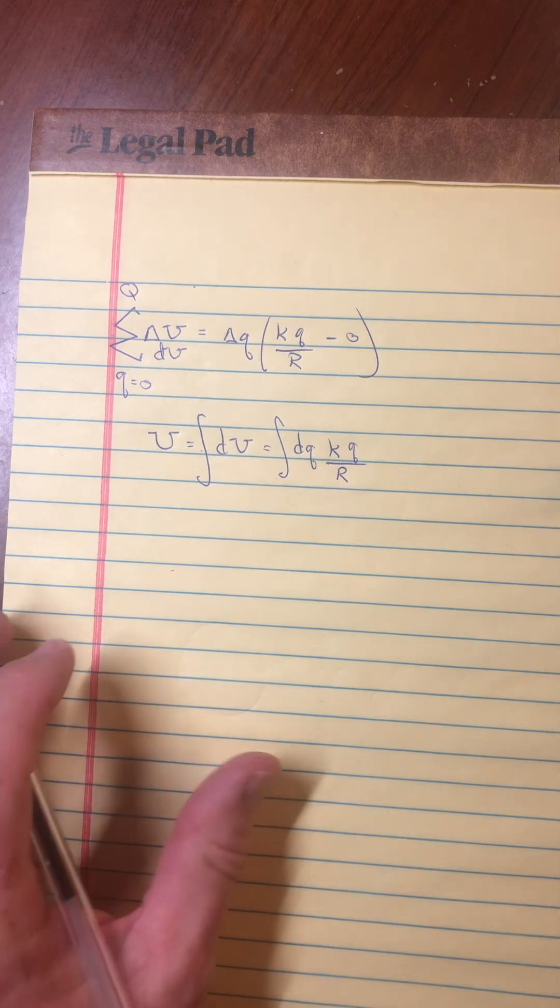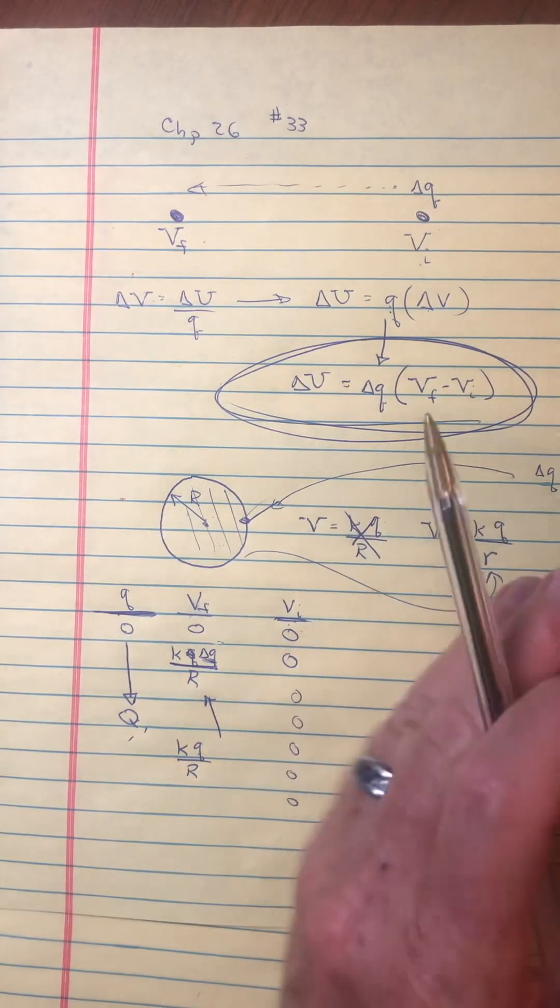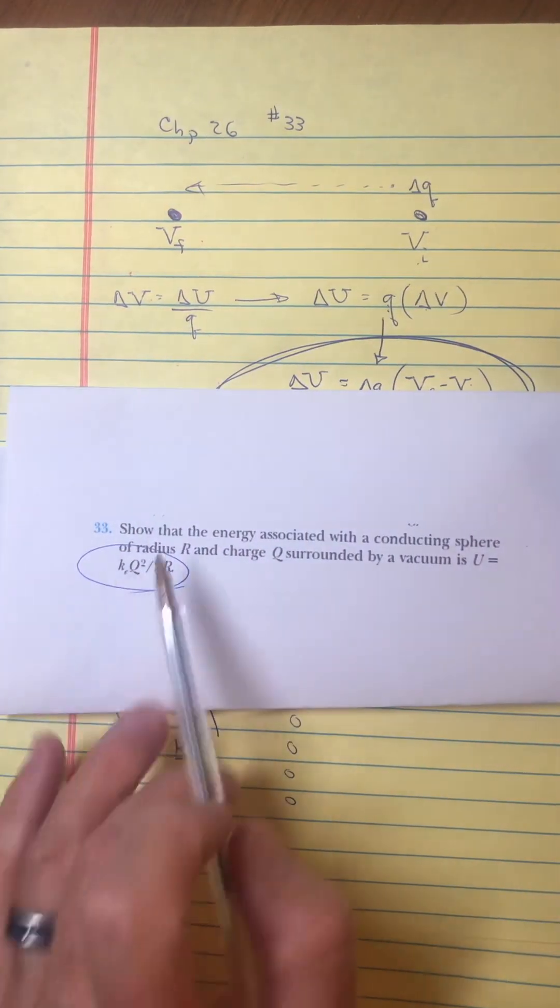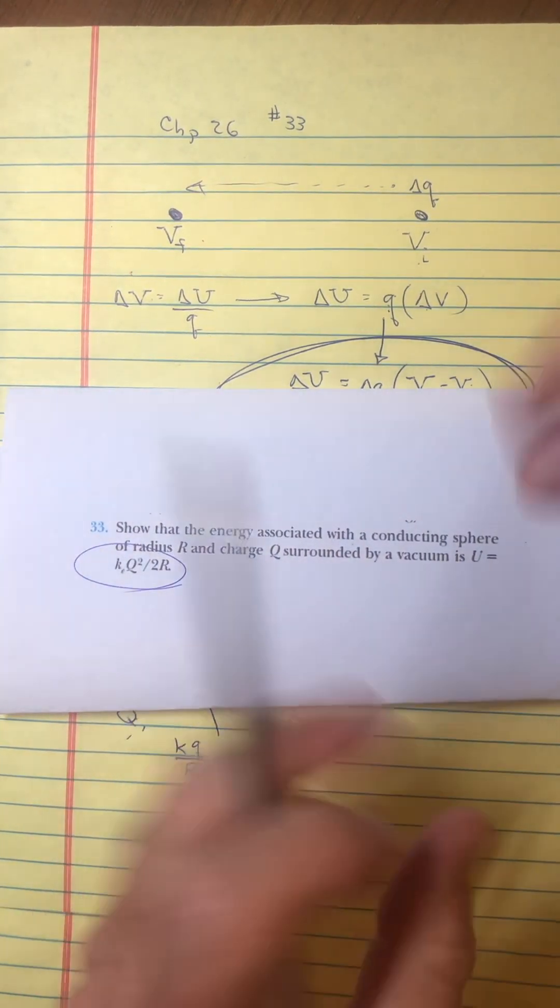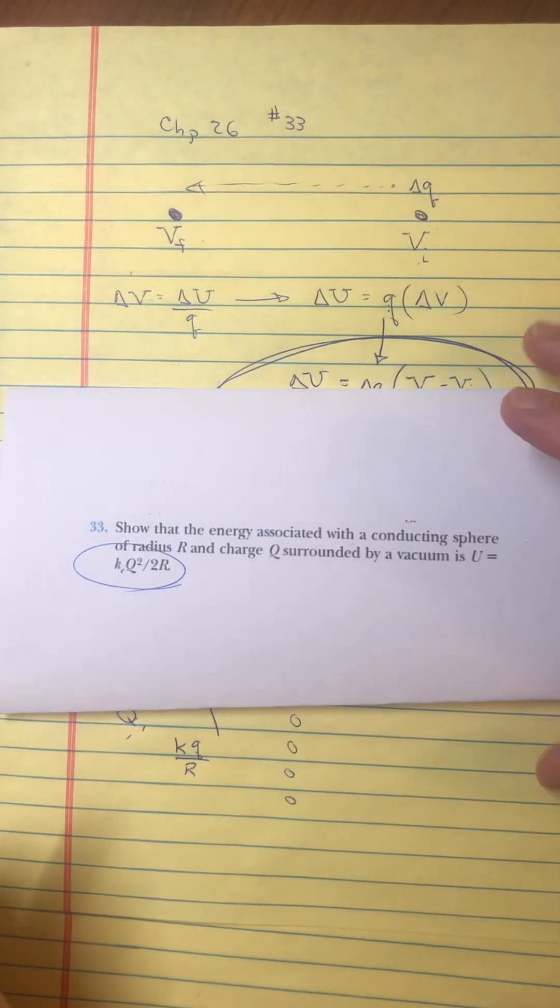And that's probably the hard part of this problem, getting to the point of saying look, I'm going to assemble a bunch of charges. That's what it says: show that the energy associated with the conducting sphere is. So you've got to pile it on there, you've got to go from no charge up to some charge.